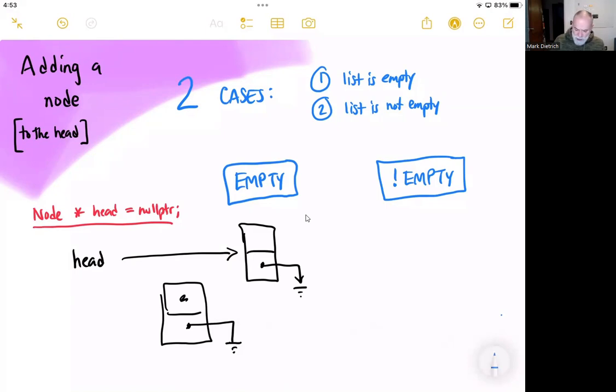First, this node that we just created, that can actually point to head. Since head's currently pointing to this node right here, we can just say, all right, well, our new node is now pointing to the head. And then we can just simply tell head, nope, go ahead and point to that new node, and we're golden. Our chain is now intact.